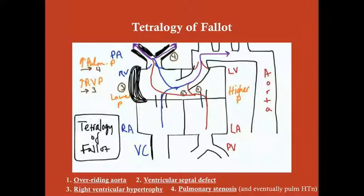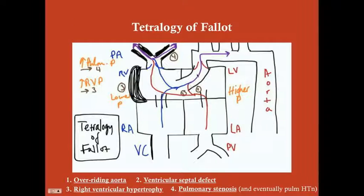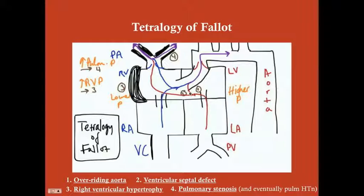The first cyanotic defect is tetralogy of Fallot. It's called tetralogy because there are four problems, but really there are only two primary anatomic problems that cause the other two. The first is an overriding aorta — the aorta sits over both the left and right ventricle rather than just the left. The second is a ventricular septal defect. Because you have an overriding aorta combined with the VSD, blood can shunt from the right to the left — that's why this is a cyanotic disorder.